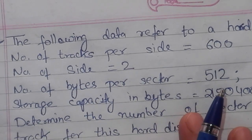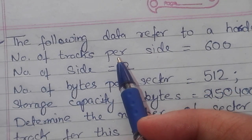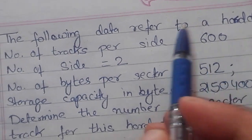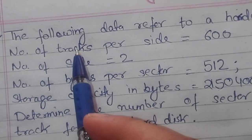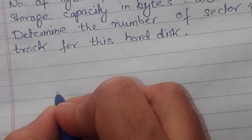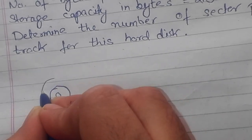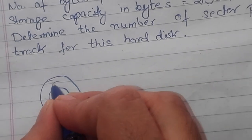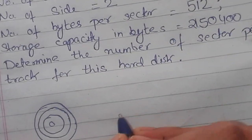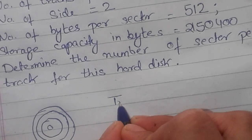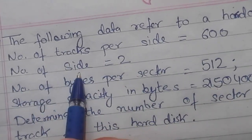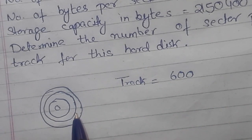Here is a question about a hard disk. The question gives the following data: number of tracks per side is 600. Suppose this is a hard disk — the number of tracks is 600, so tracks equals 600.